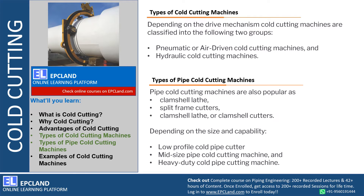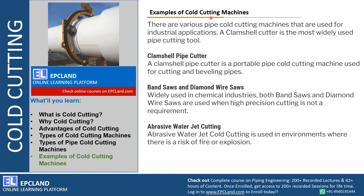Now let us look at examples of cold cutting machines. The clamshell cutter is the most widely used, especially for pipe cutting. The clamshell pipe cutter is a portable pipe cold cutting machine, and it is mostly used for cutting and beveling pipes. Bevel ends can be made using cold cutters called clamshell pipe cutters.